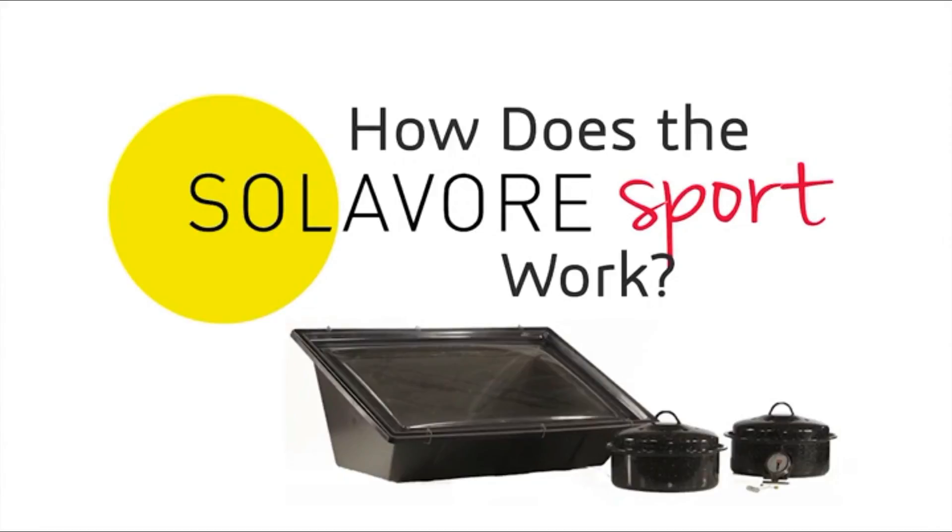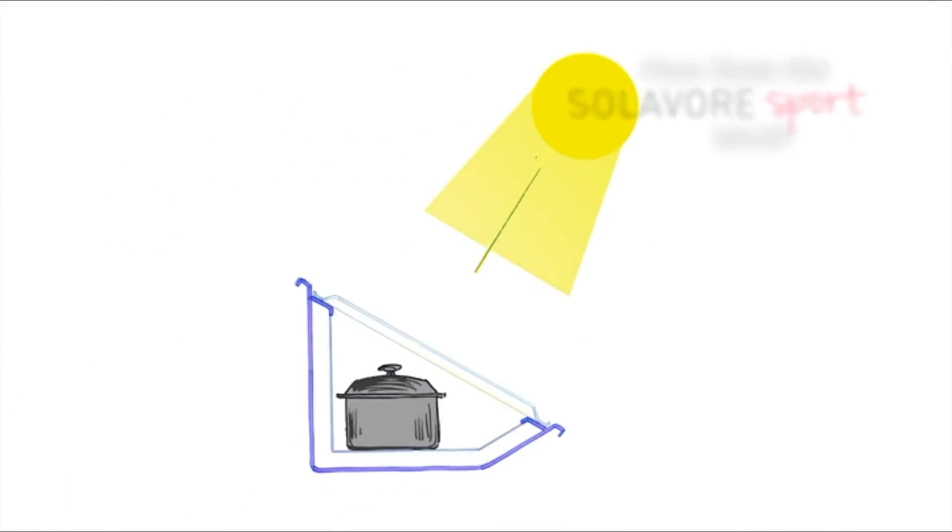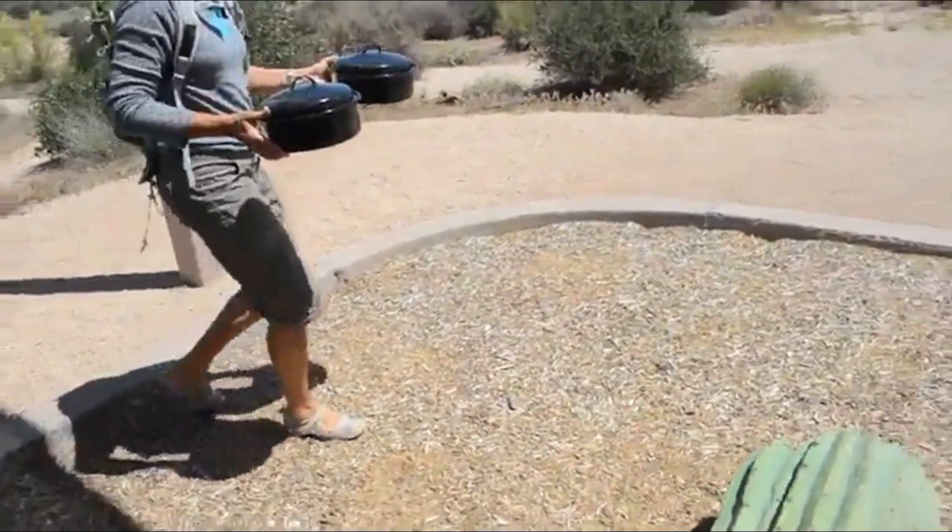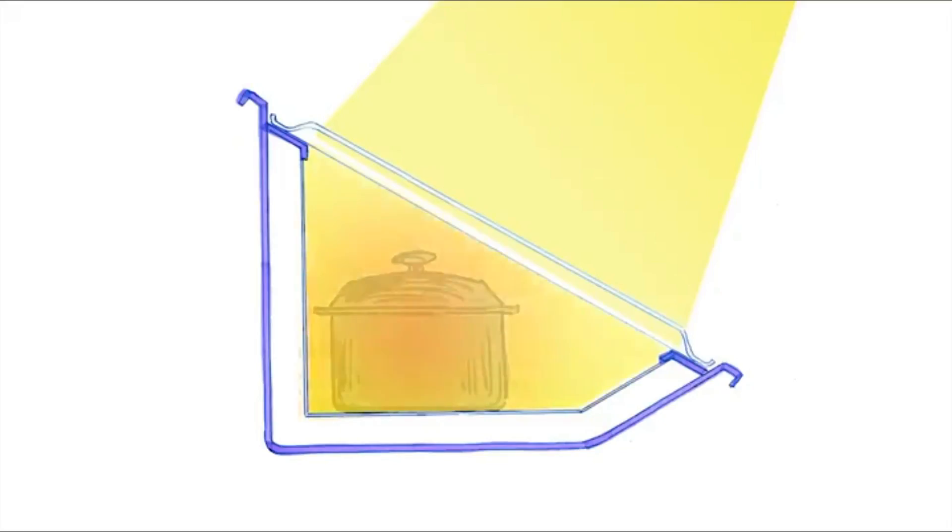This is how the solar stove works. Sunlight enters through the transparent cover, then hits a pair of 9-inch black graniteware cooking pots. These pots absorb light, transforming the sun's energy into heat. Internal reflectors increase power. The transparent cover and heat-resistant plastic film create an insulating air layer that traps heat inside.